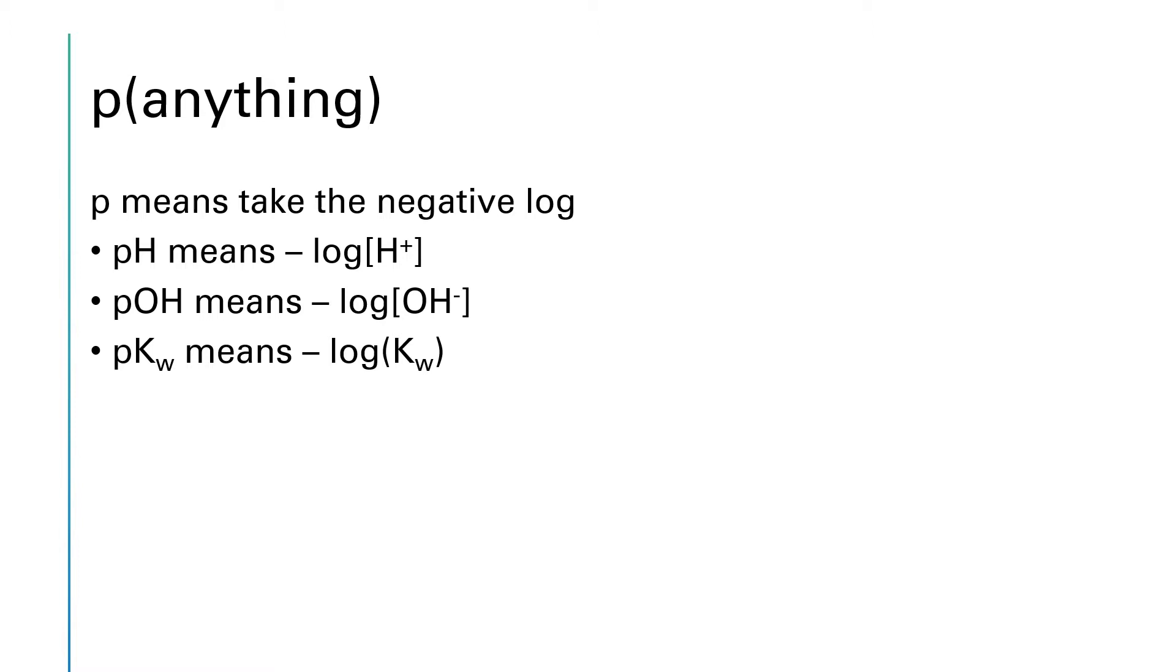In the next chapter we're going to be looking at pKa and pKb, where Ka and Kb are acid and base equilibrium constants. So we can take P of anything by taking the minus log.